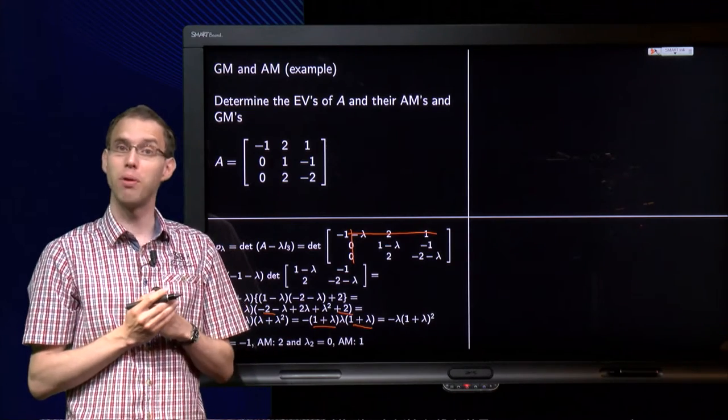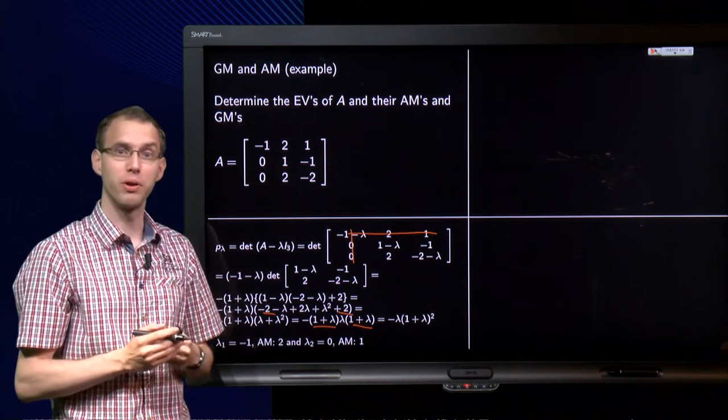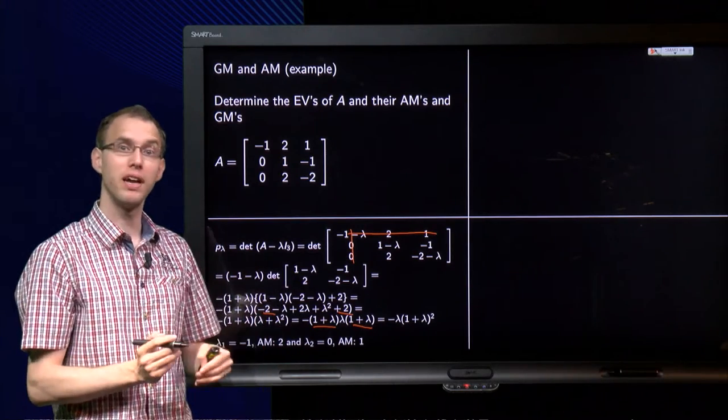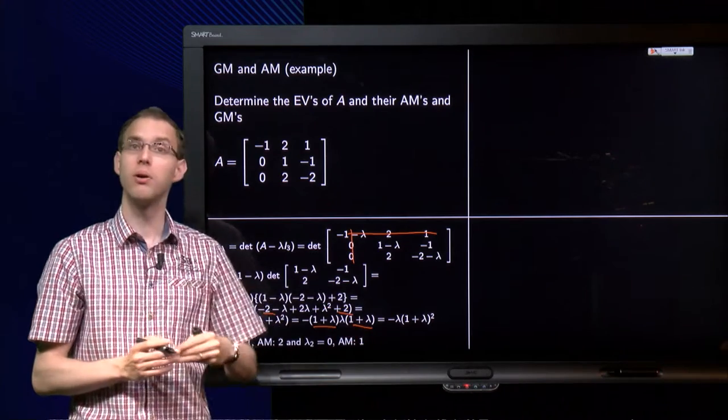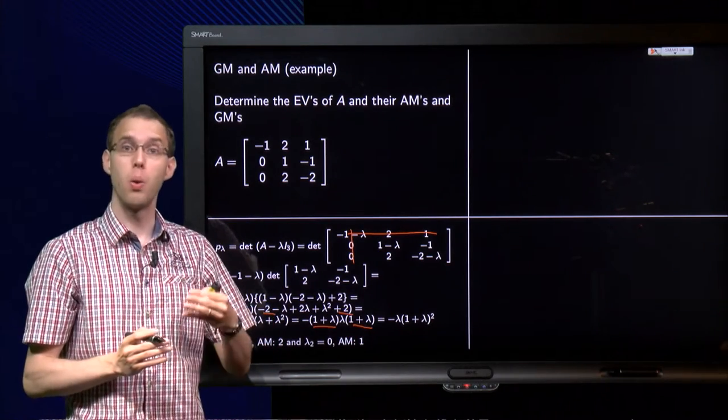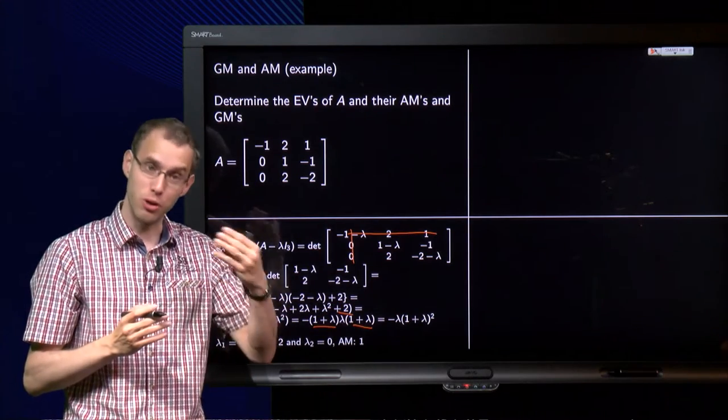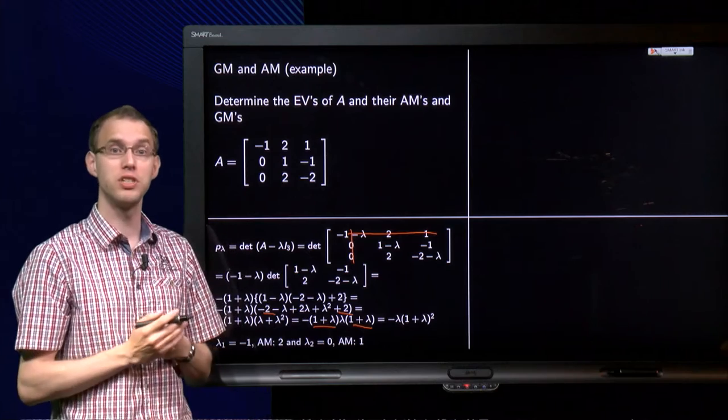So there we are, there we have the characteristic polynomial. The eigenvalues are the zeroes of this polynomial, you can read them off straight away. The zeroes are lambda equals 0, which occurs once, so it has algebraic multiplicity 1. And lambda equals minus 1, occurs twice, so it has algebraic multiplicity 2.